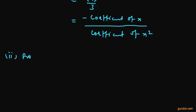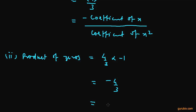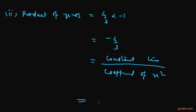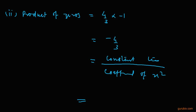Secondly, we find the product of zeros: 4/3 multiplied by minus 1 equals minus 4/3. This equals the constant term over the coefficient of x squared. Both relationships are verified, and this is the solution of the question. Thank you.